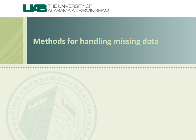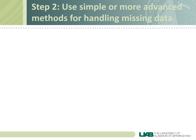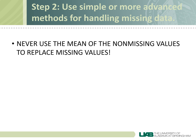Thankfully there are some methods for handling missing data. Once you've analyzed the mechanisms and patterns of missing data, you'll need to do something about it. There are simple approaches and more advanced approaches, but whatever approach you take, you should have good reasons for doing so and disclose this in your data analysis plan or in the results. One thing you should absolutely never do is replace missing values with the mean of the non-missing values — this will really bias your results and can reduce the variability or variance in your data, which will have important implications in the analysis.